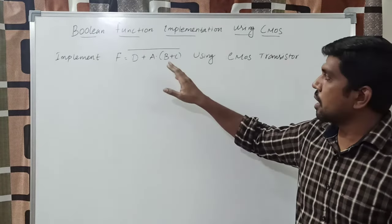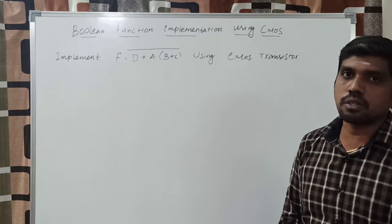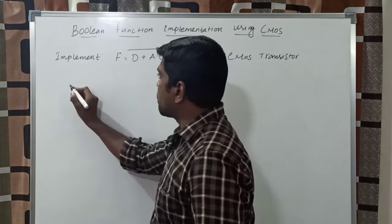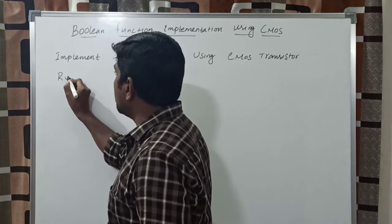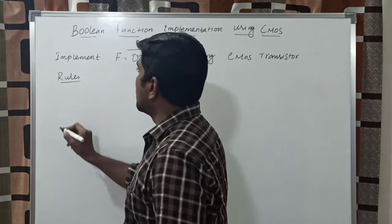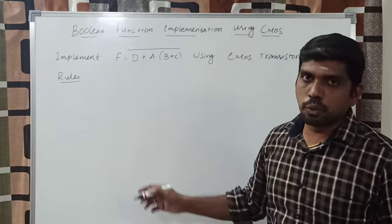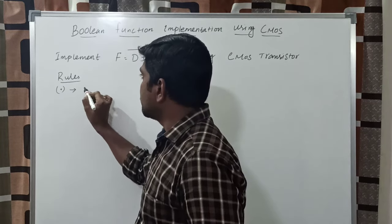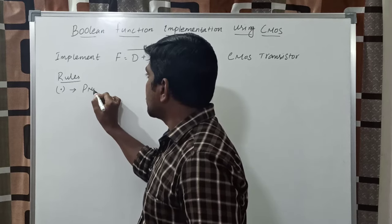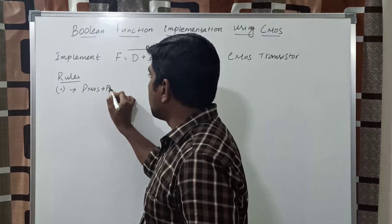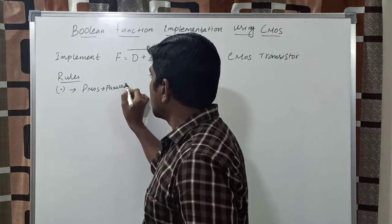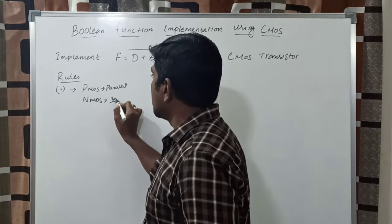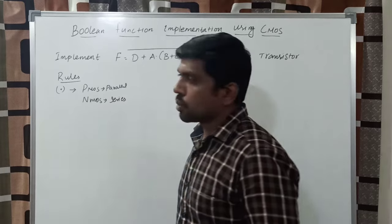In this equation, how it transforms into CMOS transistor logic is what we discuss today. Before solving the problem, first write the rules. In CMOS logic we follow two rules. The first rule: for a multiplication function, PMOS connects in parallel and NMOS connects in series. That is rule number one.